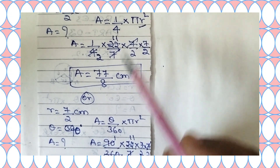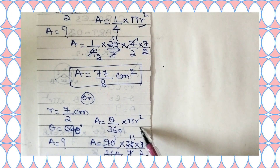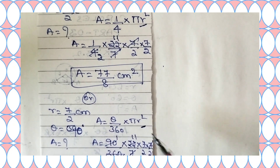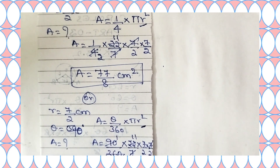If you use 1 by 4 pi r square, you will get the same answer. Using theta by 360 into pi r square also gives the same answer. So like this we solve the second question.